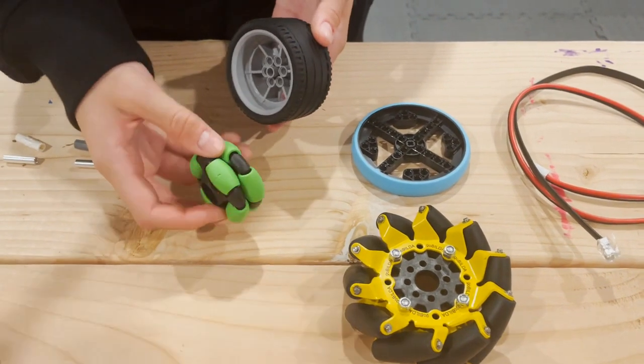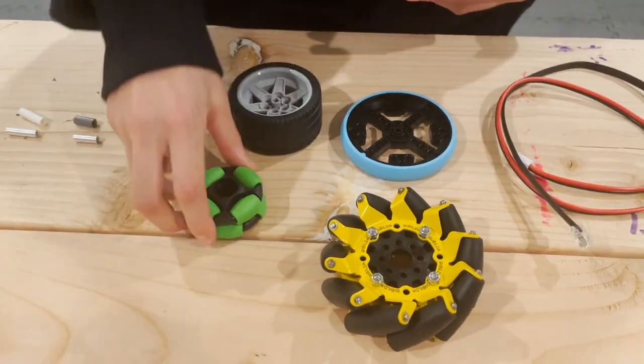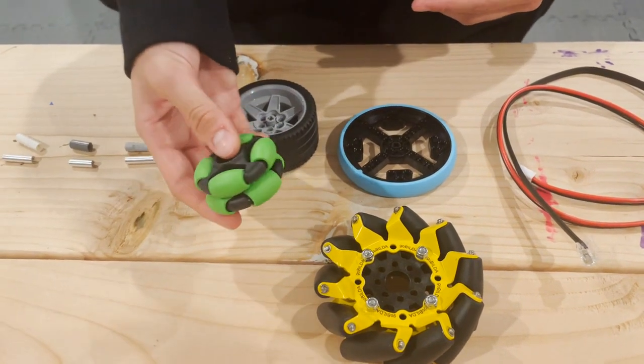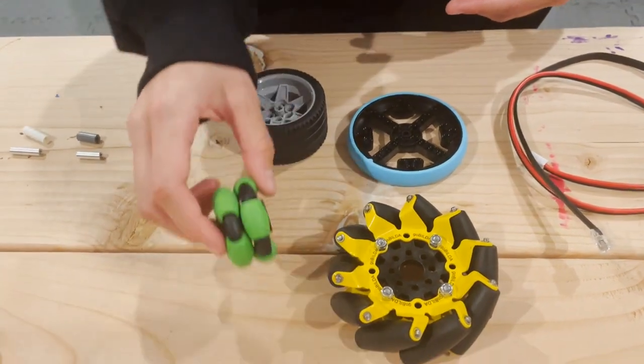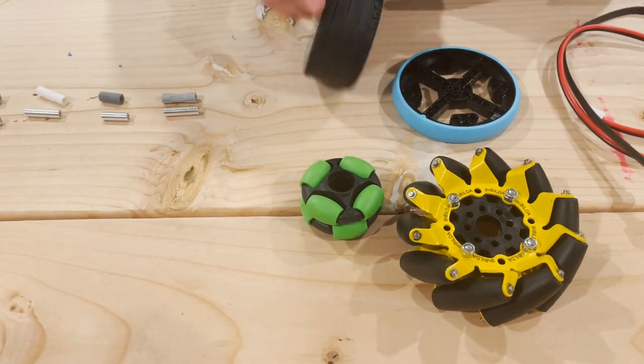The other types of wheels that we have is this LEGO wheel and this FTC wheel. This FTC wheel is also easier to go side to side compared to this one where it's just for linear motion.